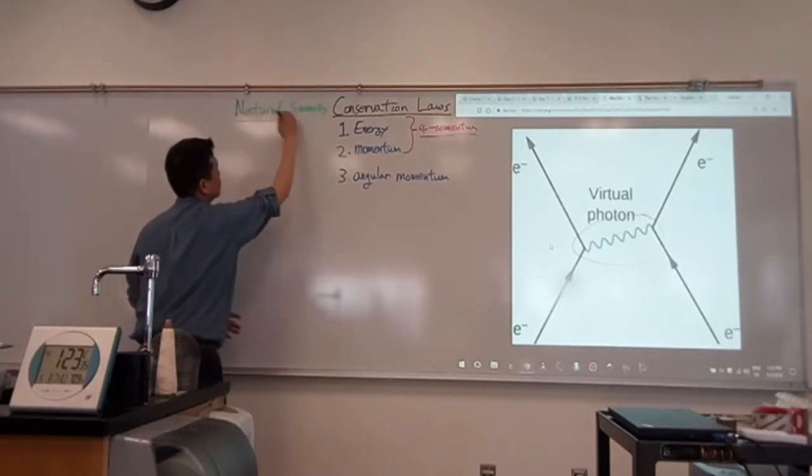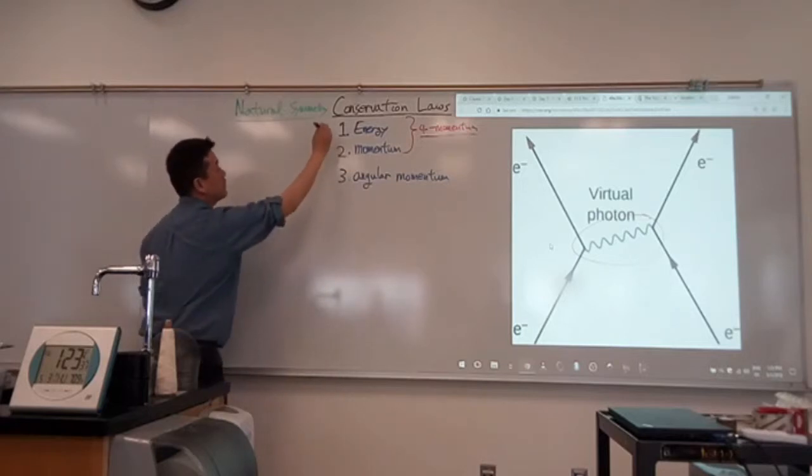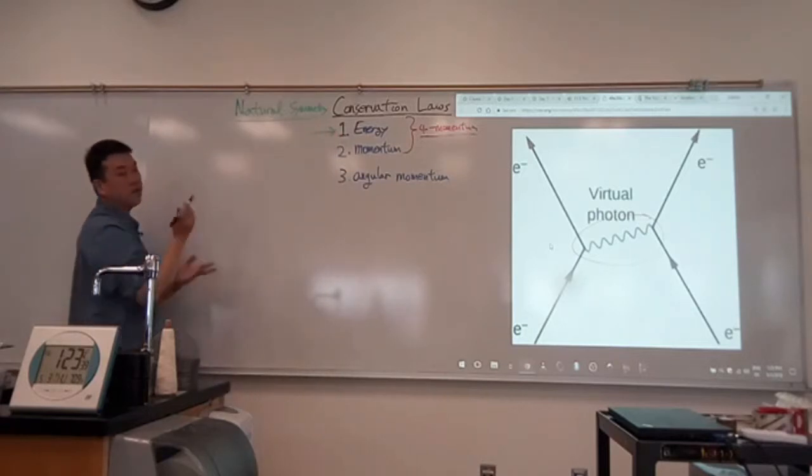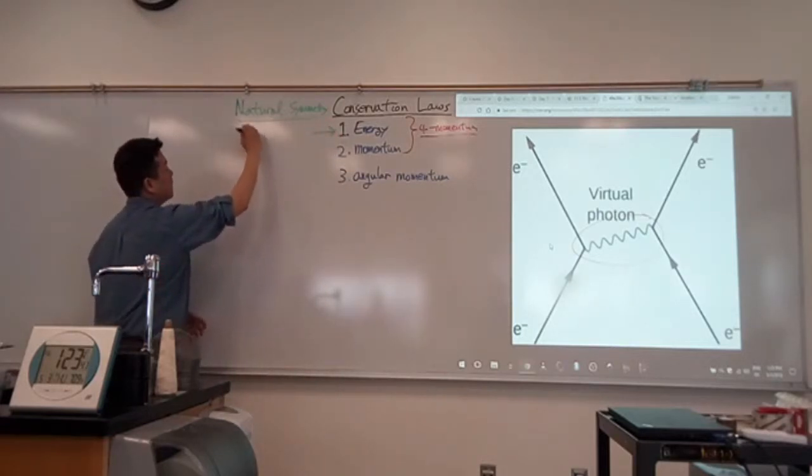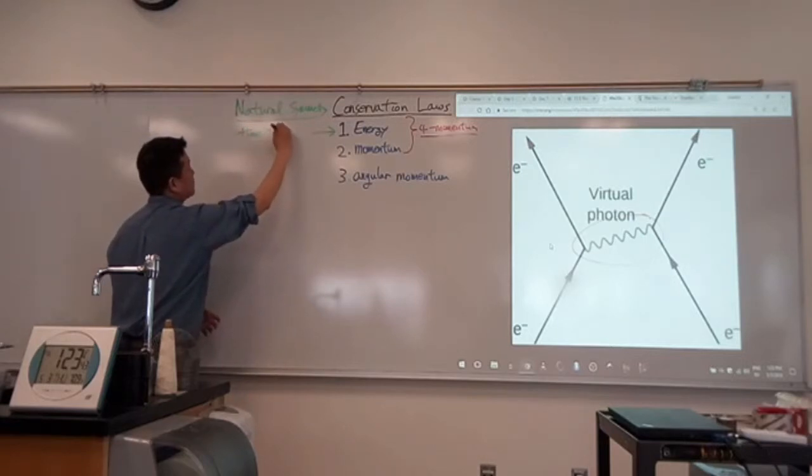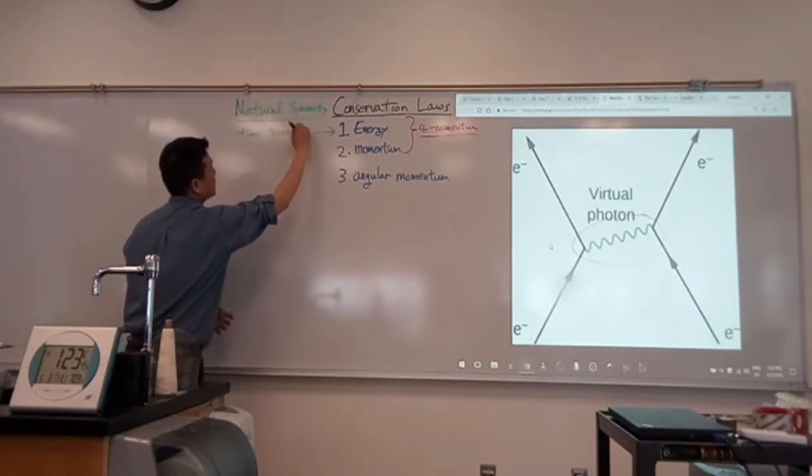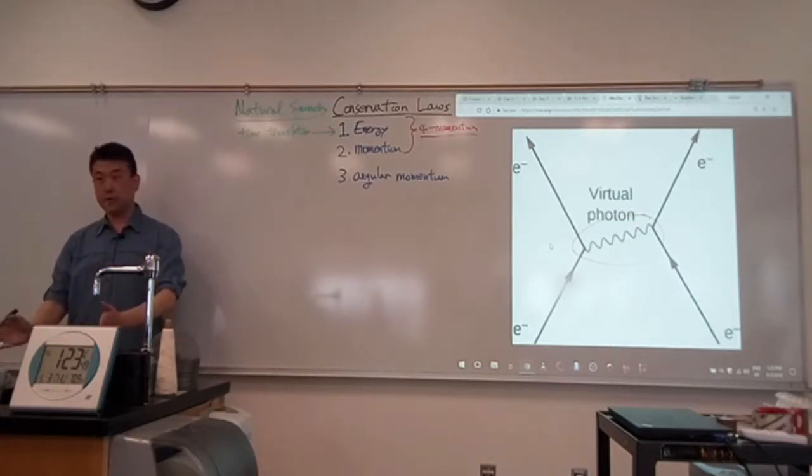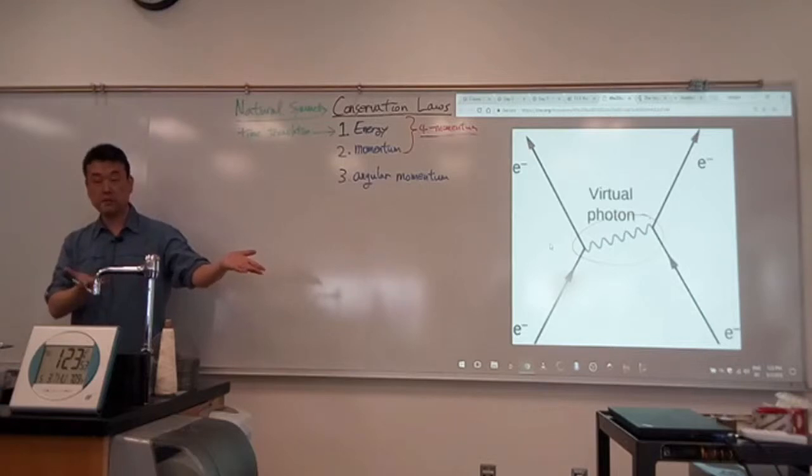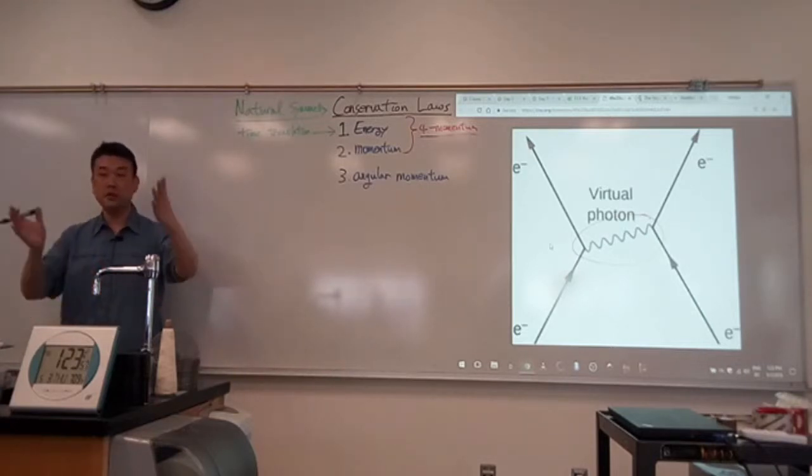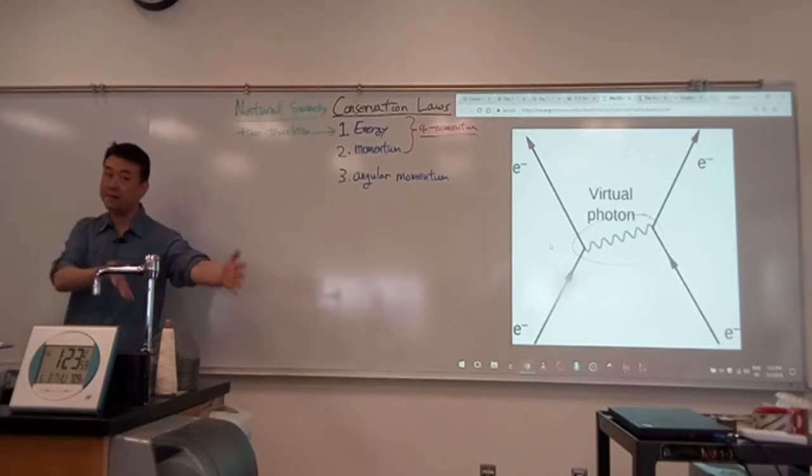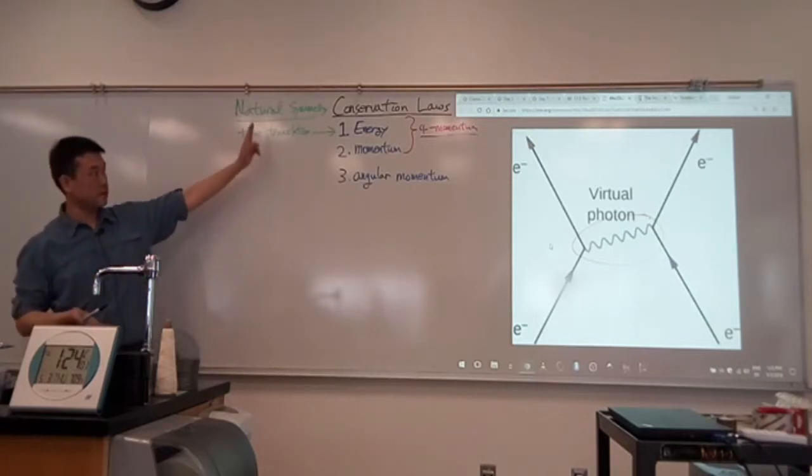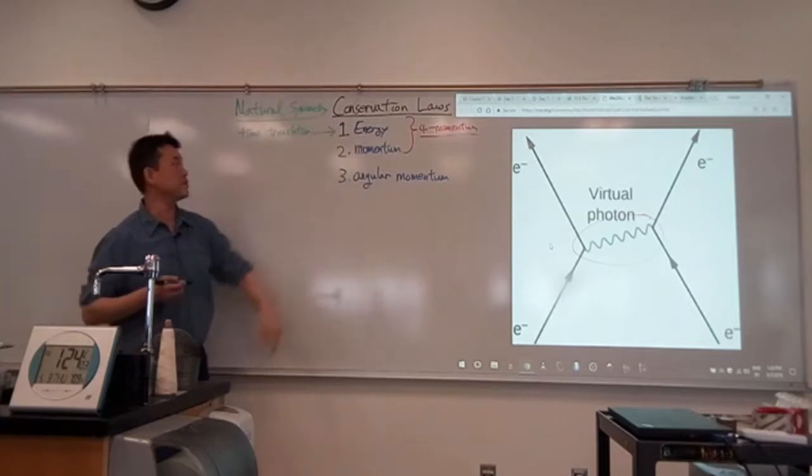So the symmetry that's associated with energy conservation is a symmetry with respect to time translation. You can think of it this way: the experiment that you do today, if you did it tomorrow, you should still get the same result. So that's what we mean, we have time translational symmetry. When you translate a system in time, nothing changes. So that's directly related to energy being conserved.